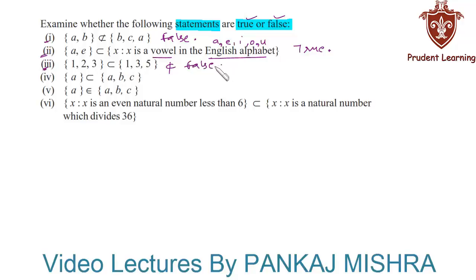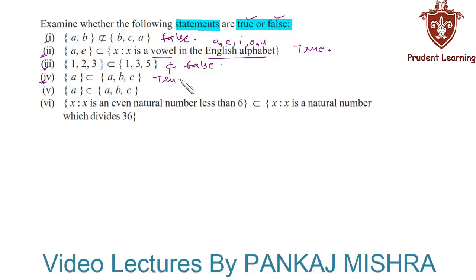In the fourth section, the only element a of the first set is also present in the second set. Therefore, the first set is a subset of the second set, and this statement is true.